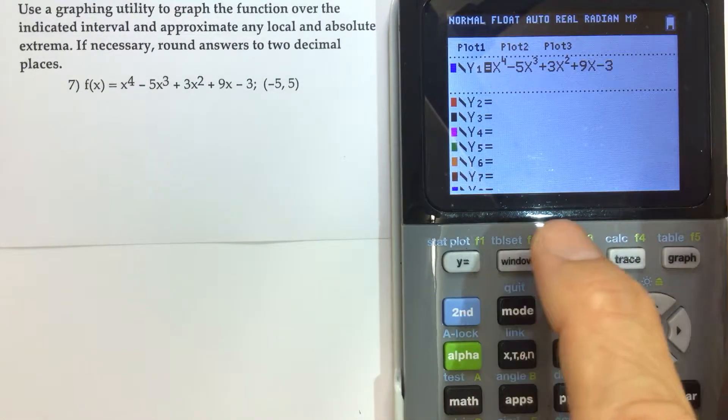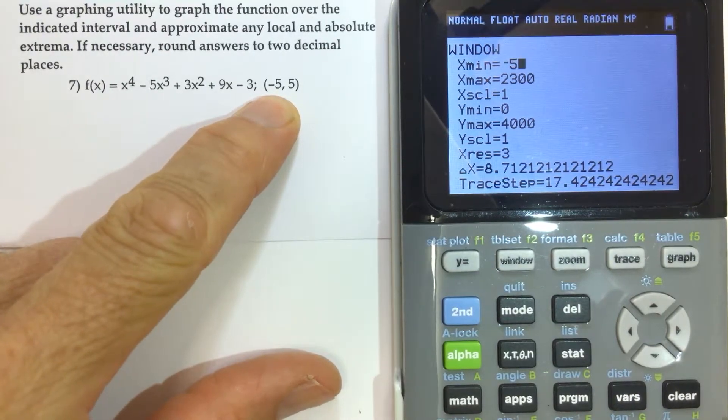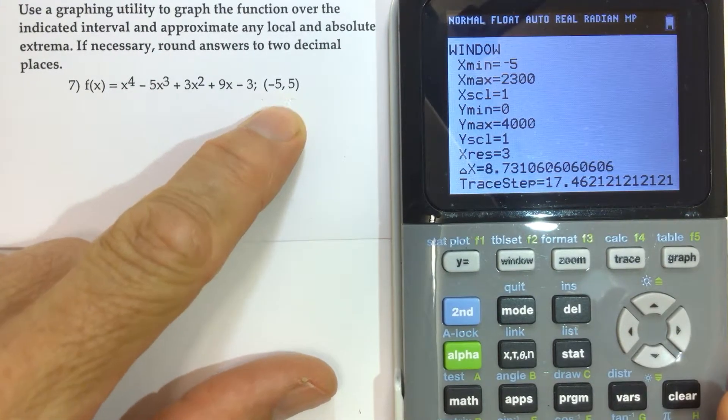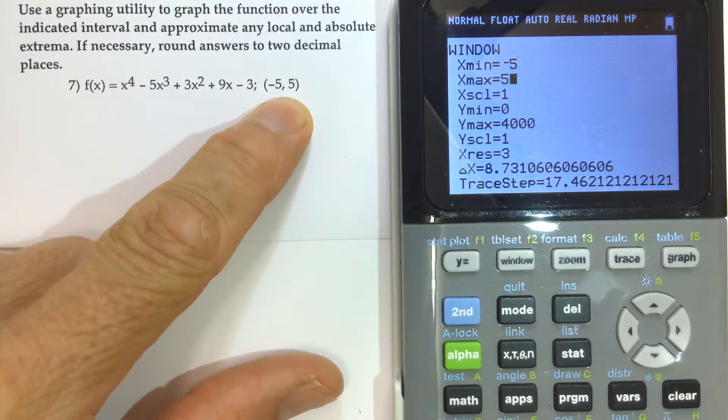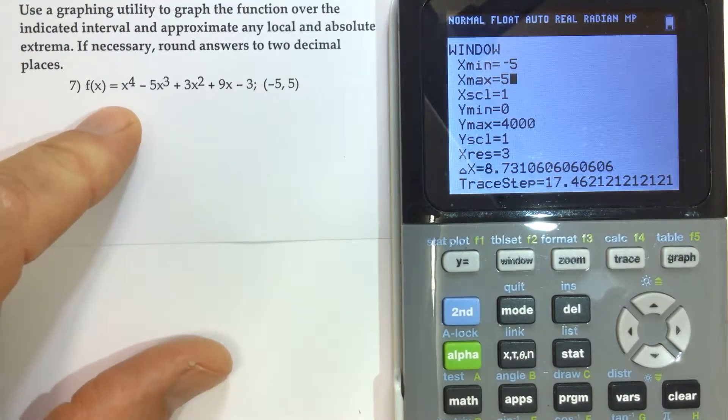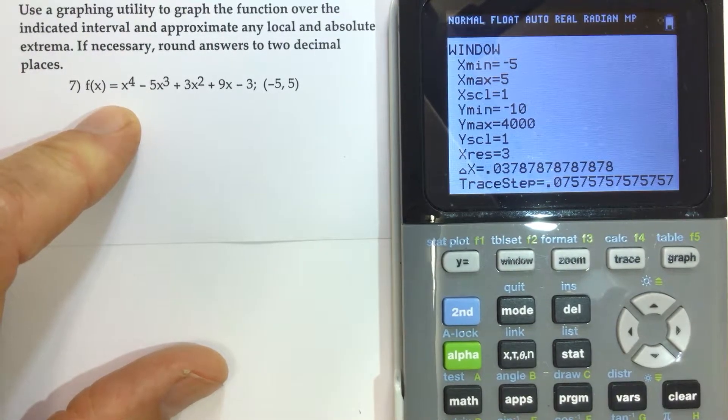And then we want to identify the window as negative 5 to 5. So we're going to let our x min be negative 5. That's our domain that we're looking at. And x max is 5. We're not sure how high or low it gets, but I was in a different window here before. So we're going to start with negative 10 to 10.